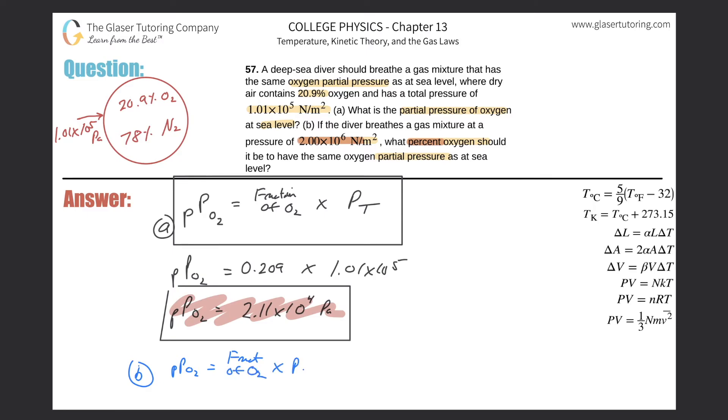So the partial pressure of oxygen, we need it to be 2.11 times 10 to the fourth Pascals. We're solving for F sub O2 for fraction of oxygen, and then we're going to multiply that by the total pressure of the whole gas, which they told us was 2 times 10 to the sixth. And they're all newtons per meter squared, which is a Pascal, so that's fine. No conversions are necessary.